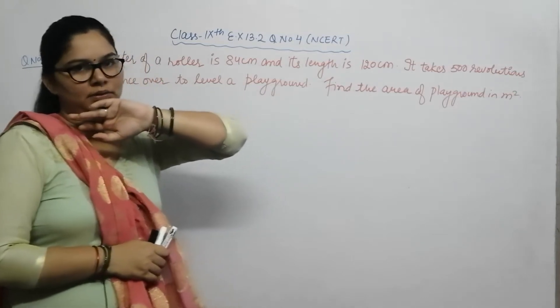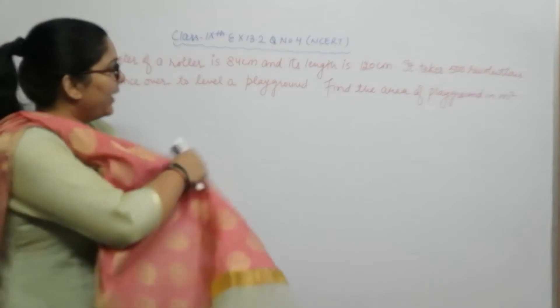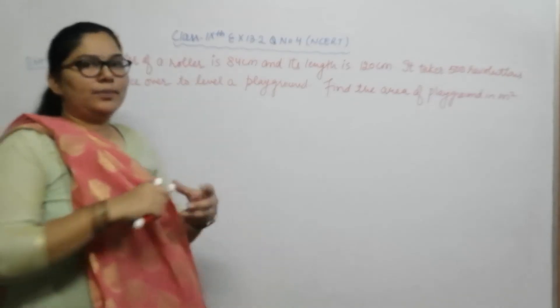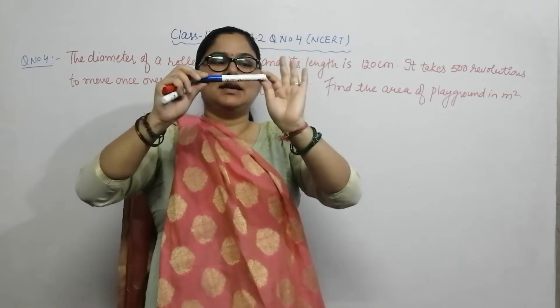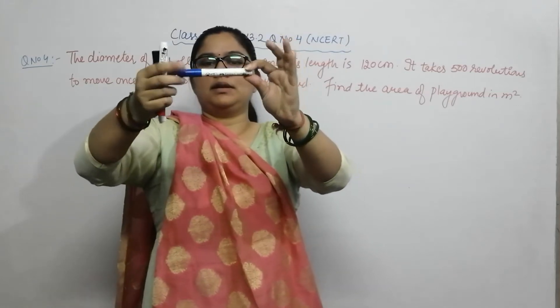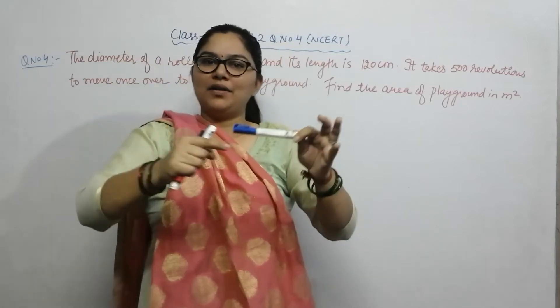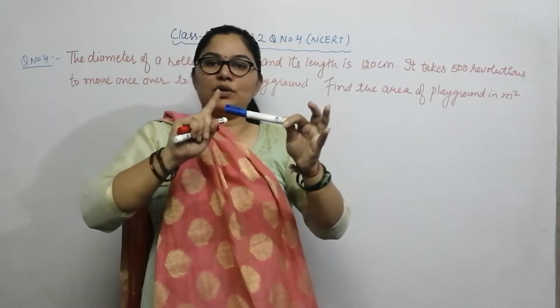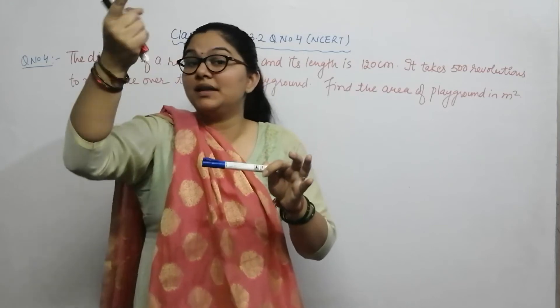Let's see what the question is asking. If we have a cylindrical roller that rotates over the ground, and it takes 500 rotations to cover the entire playground, then if I can find the area covered in one rotation, I can multiply by 500 to get the total area.